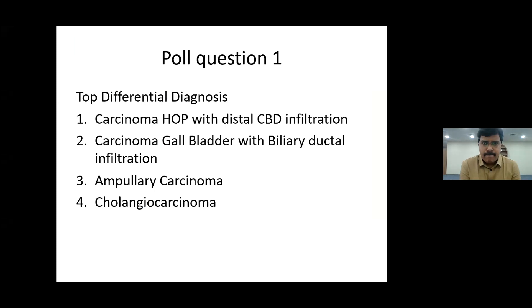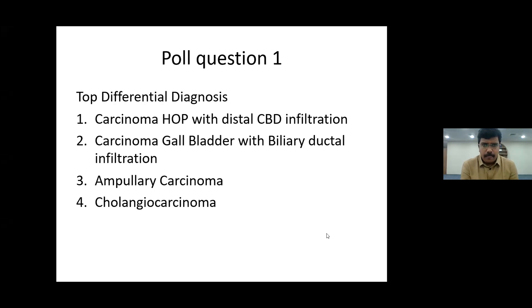Poll question: this is a 42-year-old male with a history of painless progressive jaundice and weight loss - what is the diagnosis? Poll results show most of the audience chose cholangiocarcinoma at 45%, then ampullary carcinoma at 25%, carcinoma head of pancreas at 23%, and carcinoma GB at 8%.